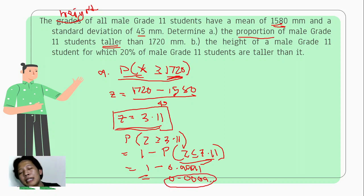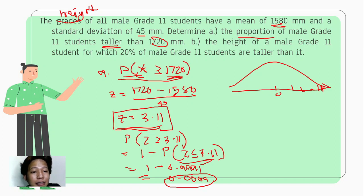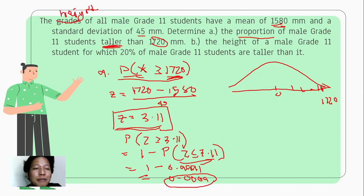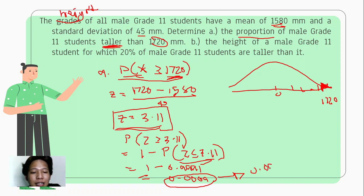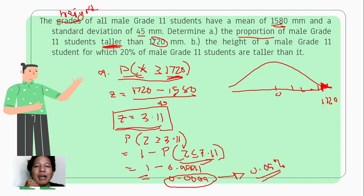This 0.0009 is the area to the right of z = 3.11 on the normal curve. Since 1720 millimeters is at 3.11 standard deviations, the proportion of students taller than 1720mm is 0.0009. Converting to percent, that is 0.09%. In conclusion, 0.09% of male Grade 11 students are taller than 1720 millimeters.